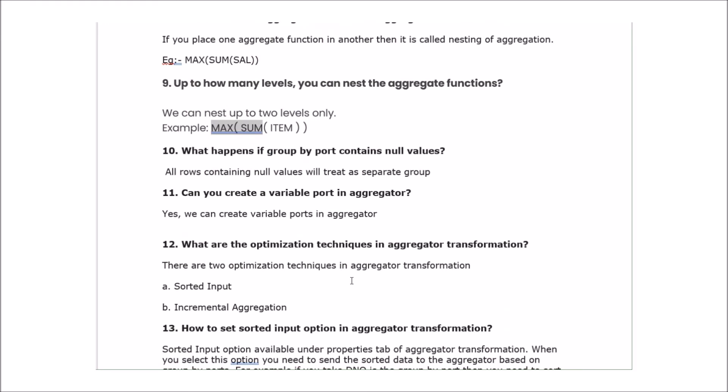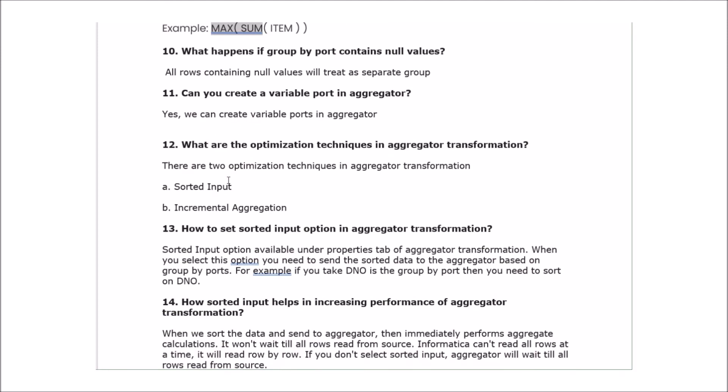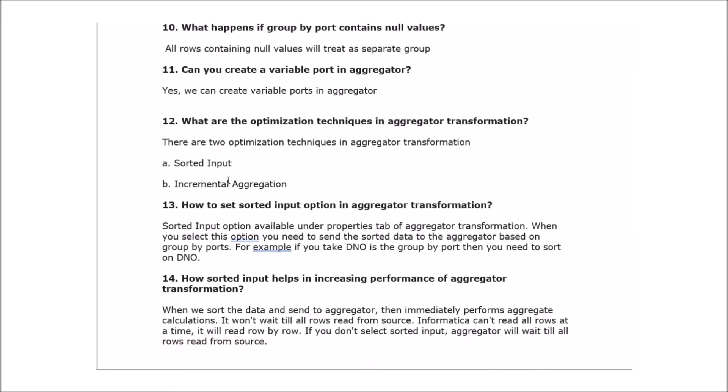The next question: what happens if group by ports contain null values? All rows containing null values will be treated as a separate group. For example, if a salary column has four records with nulls and you do a group by on salary, those null records are considered as one group, and aggregator returns the last record among the nulls.